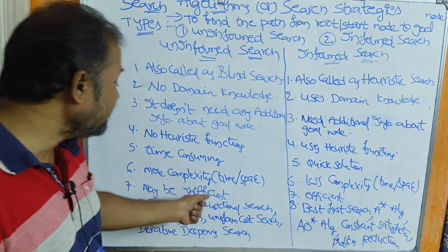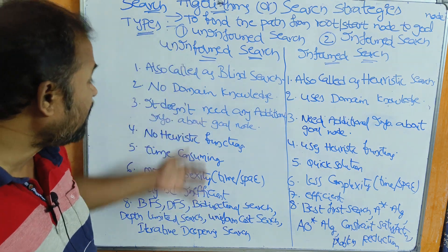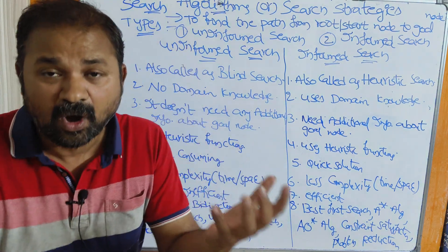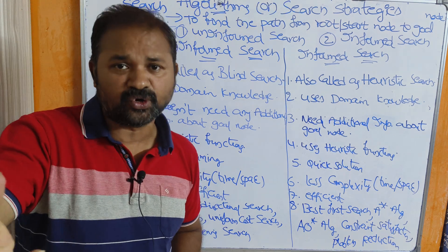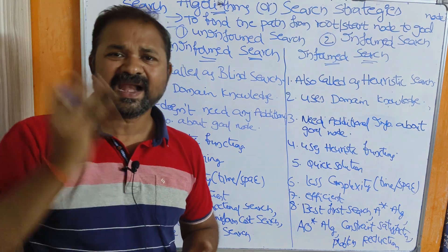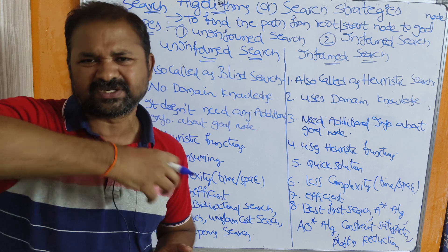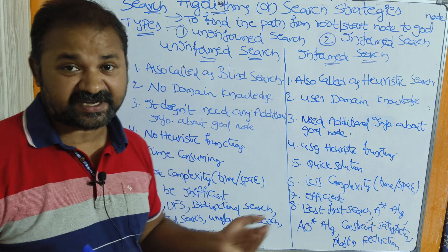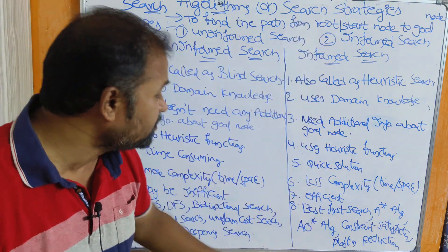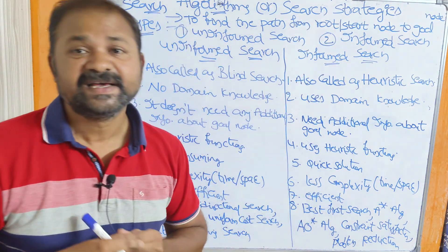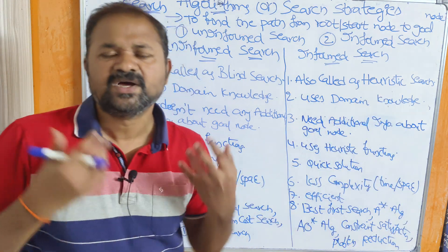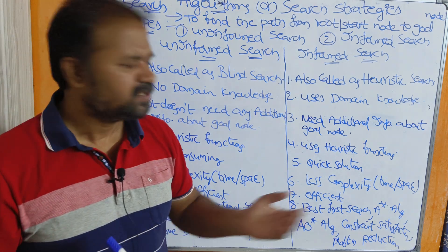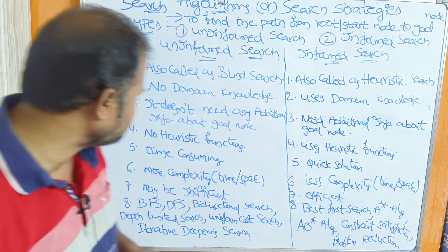The next point: uninformed search algorithms may be inefficient, because if the goal node is found at the last position, we need to search through too many nodes. Whereas the informed search algorithm is an efficient algorithm, because we use heuristic functions to select the best node out of the available nodes, making it a very efficient algorithm.